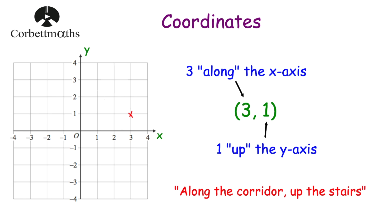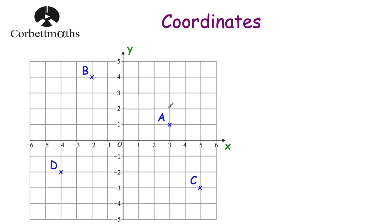Let's have a look at some questions. Here we've got some points plotted on the grid — points A, B, C, and D — and we're going to write down the coordinates of those points. Starting with point A: we go 3 along the corridor and 1 up the stairs. So the coordinates of point A would be (3, 1), making sure we put our brackets and our comma.